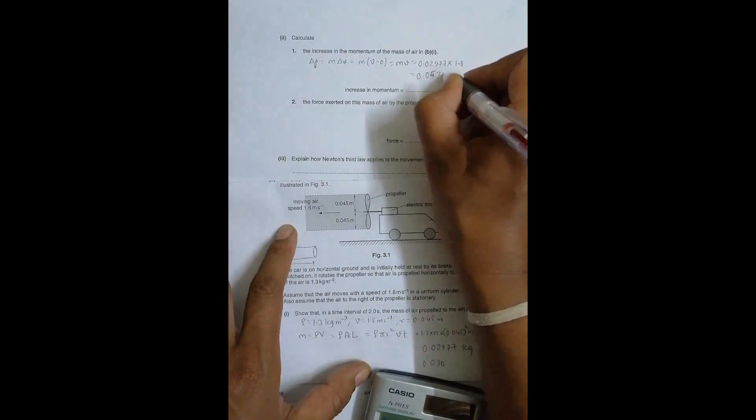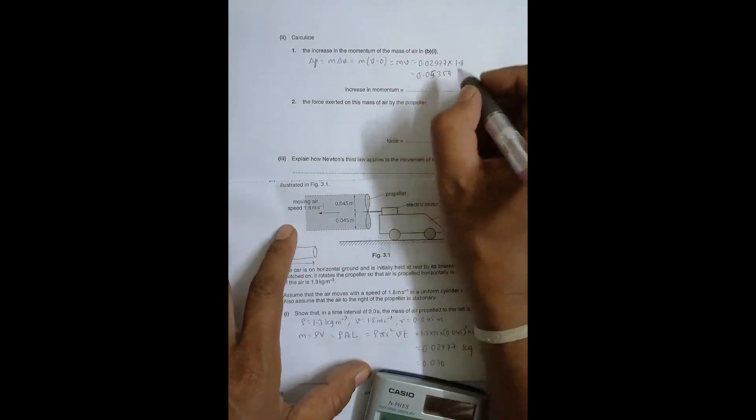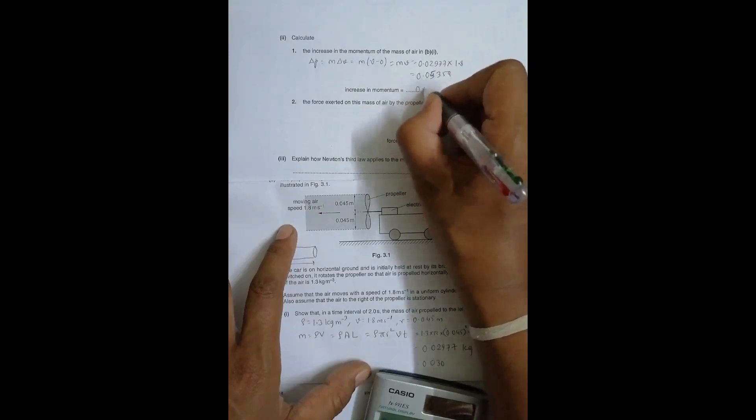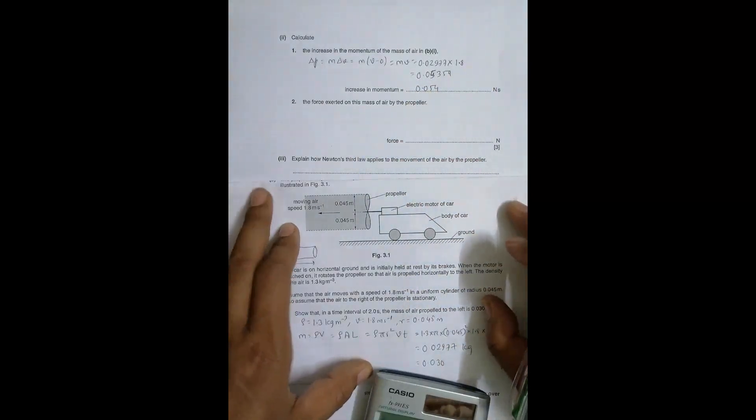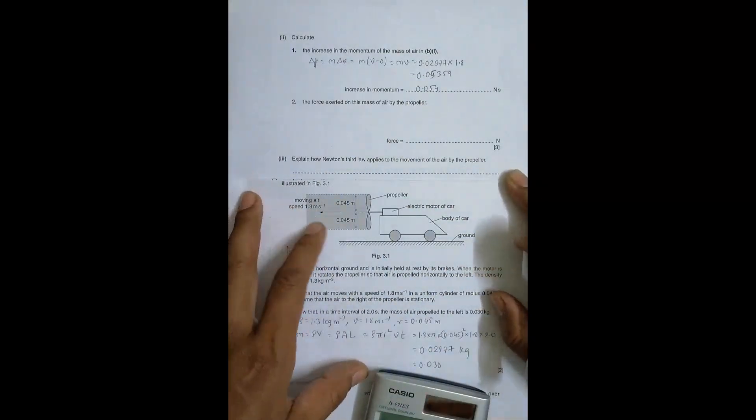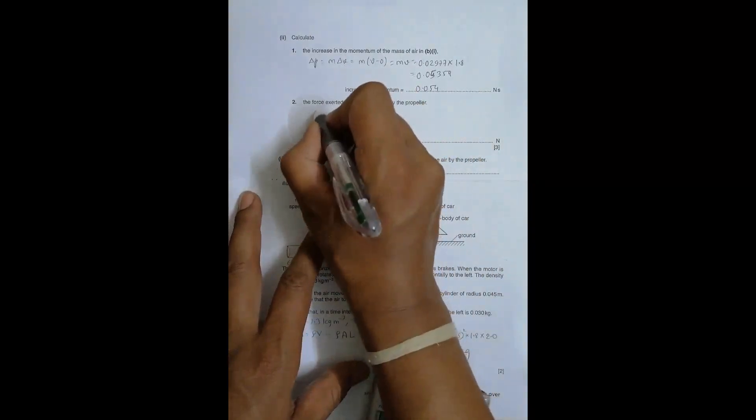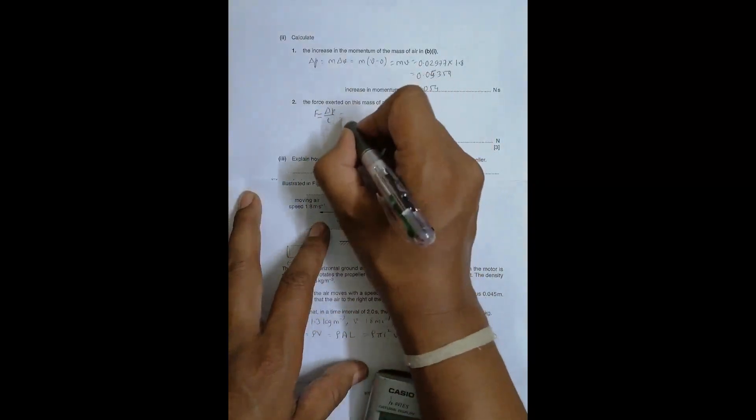When I write it in 2 significant figures it will be equal to 0.054 newton second. Kg meter per second and newton second are the same thing, just different ways of representing the same unit.